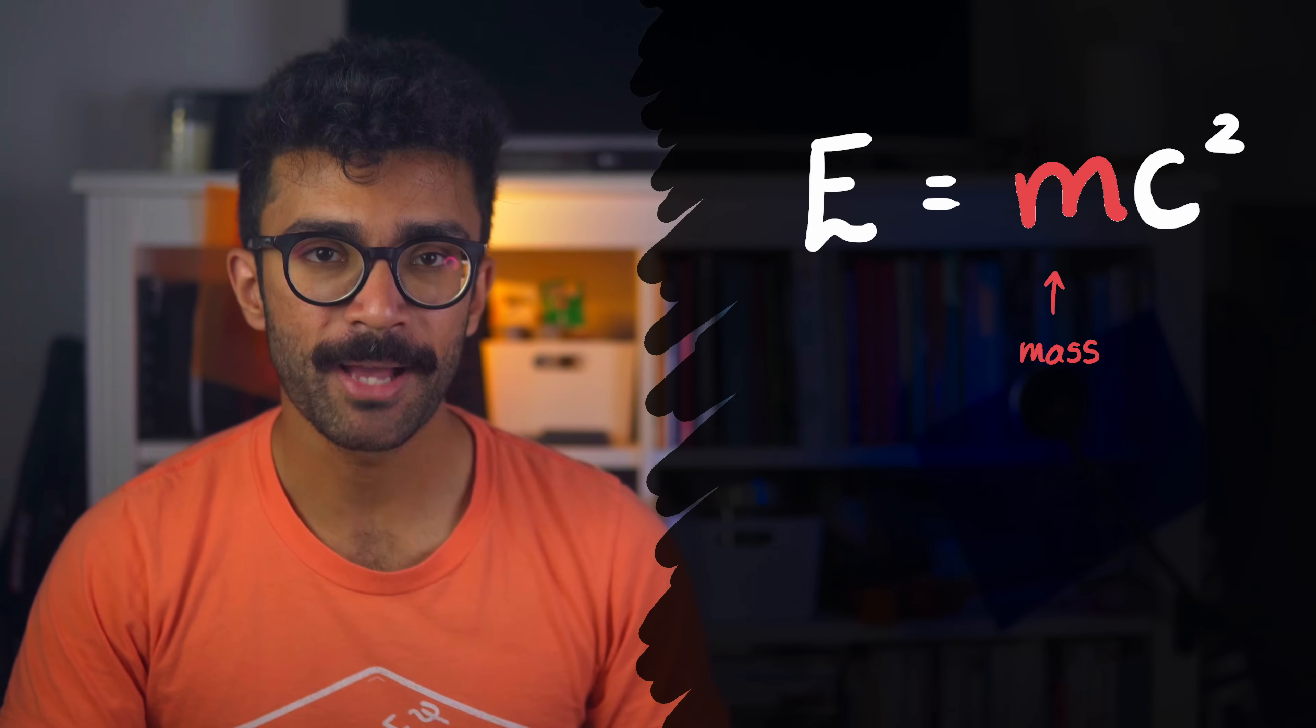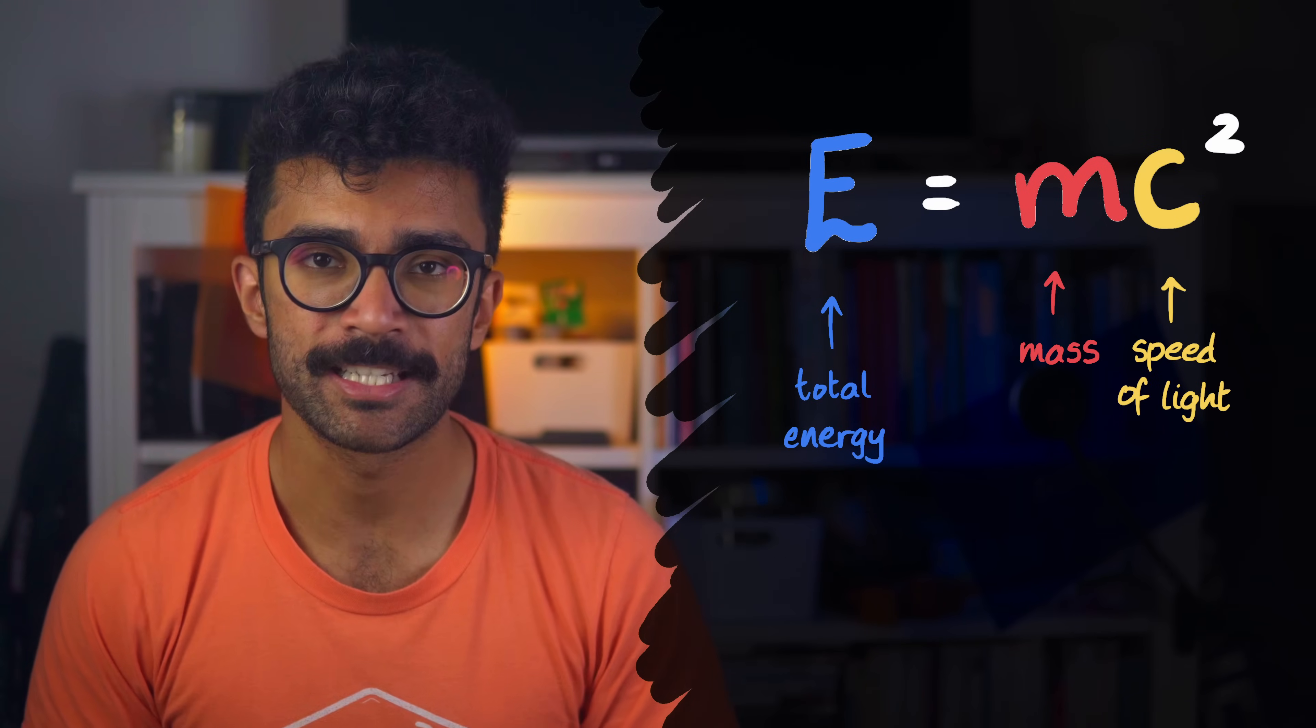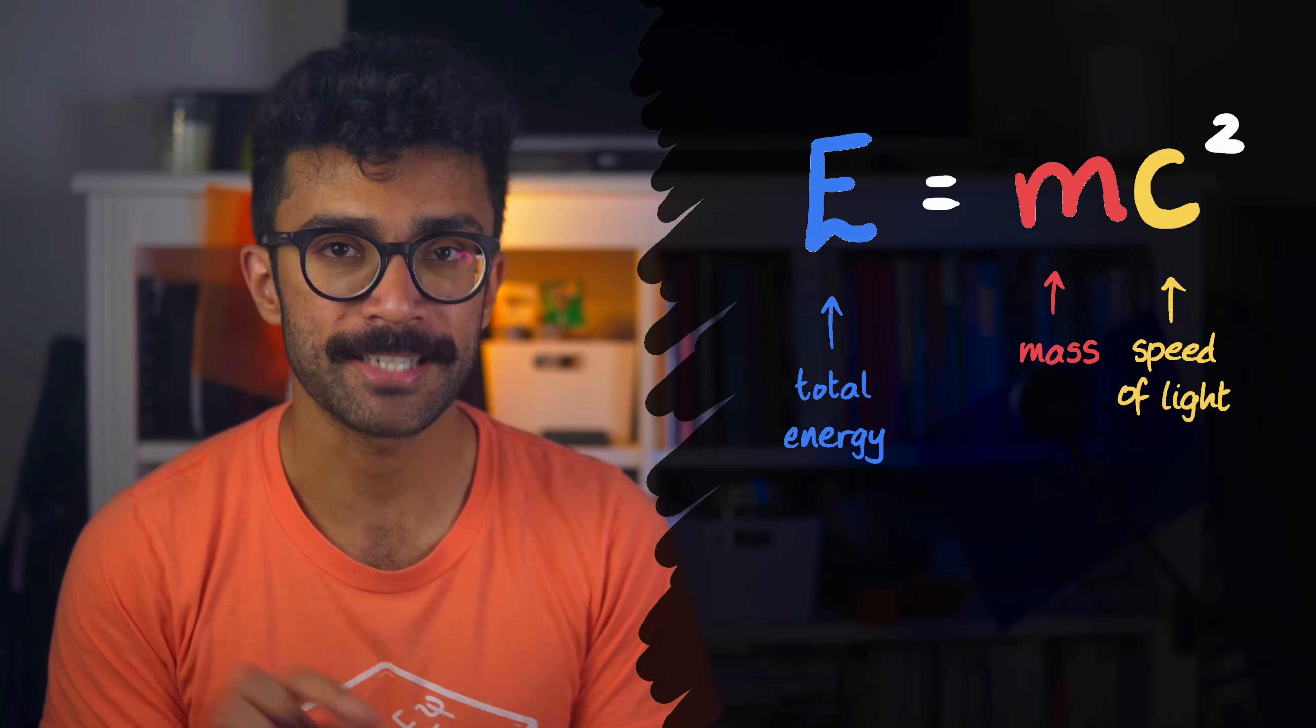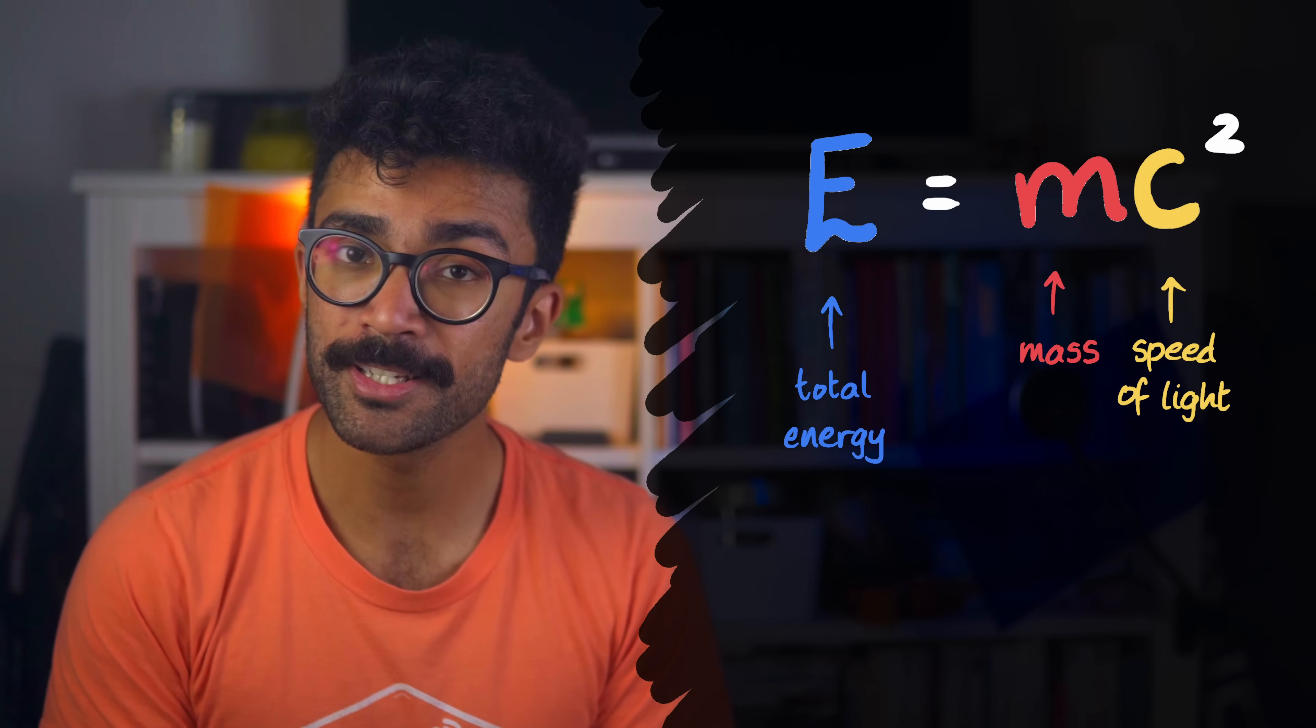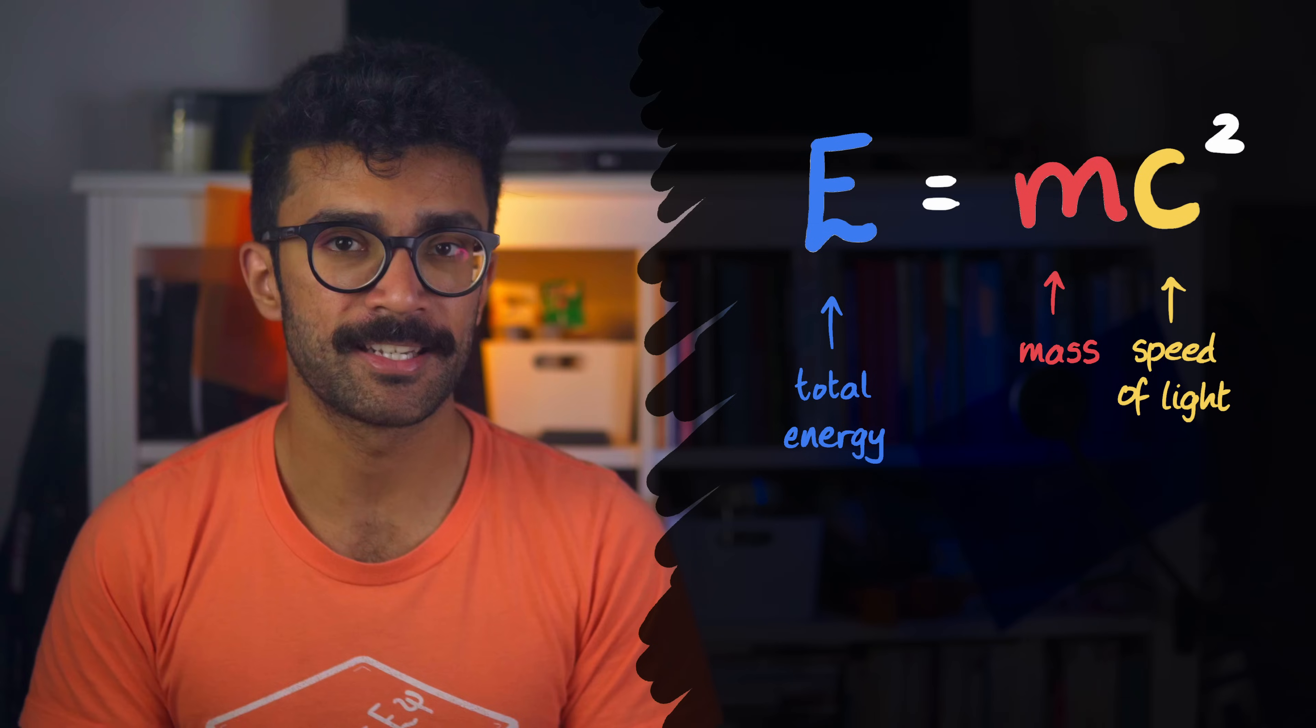Here, m is the object's mass, e is its total energy, and c is the speed with which light travels in a vacuum. In other words, the equation tells us how much energy an object has when it's made of a given amount of mass. But importantly, this equation is incomplete. It only deals with objects that are not moving.